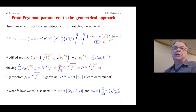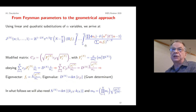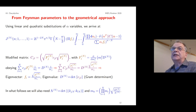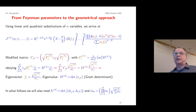Using these geometrical pictures, we go from Feynman parameters to the geometrical picture by making linear and quadratic substitutions of variables. We change the argument of the delta function so that it now contains the quadratic structure that was previously in the denominator. Setting this quadratic structure equal to one via the delta function, we get rid of the quadratic structure in the denominator, placing it into the argument of the delta function, but in the process we earn a linear denominator.